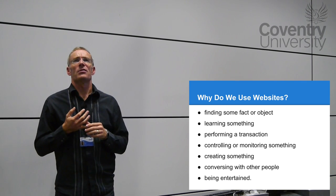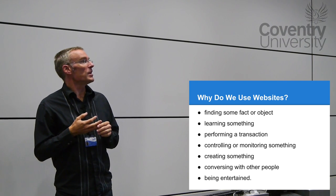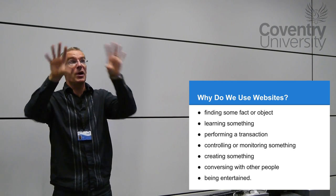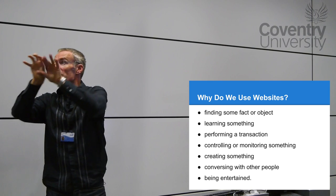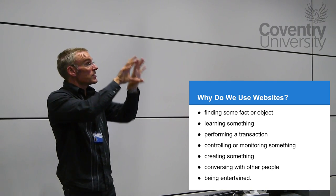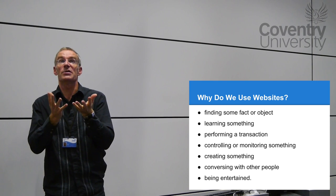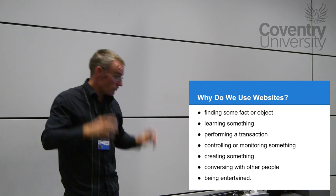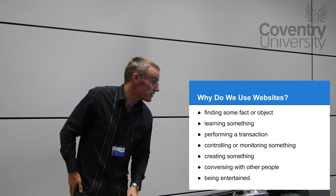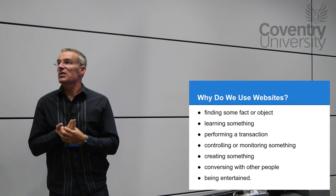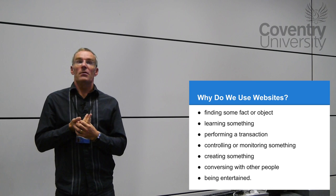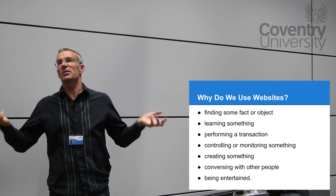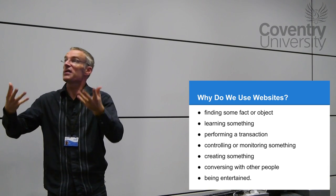A transaction is where you go through a step-by-step process. On Amazon when you buy something there's a wizard — step one, step two, step three, step four — and the design of the payment system is built to take you through those steps. There are also sites for controlling or monitoring things, capturing digital data like temperature data and putting it online.